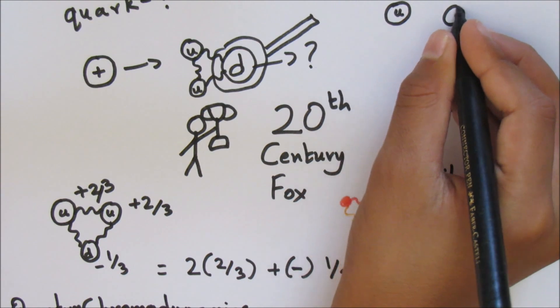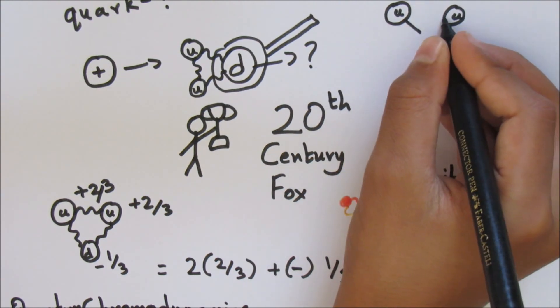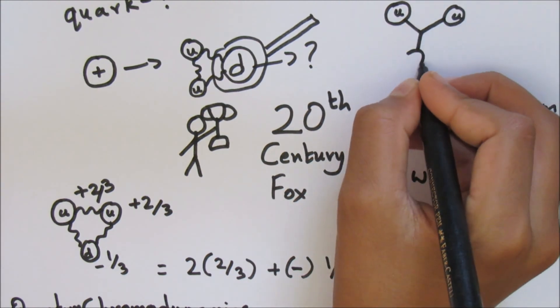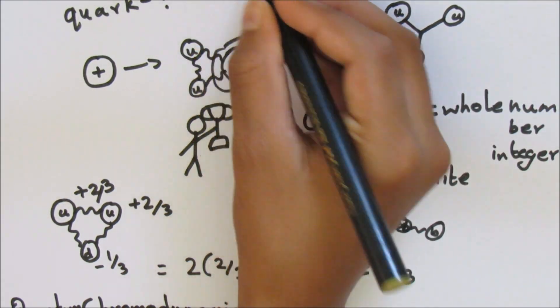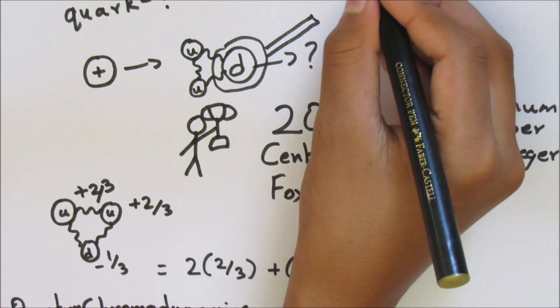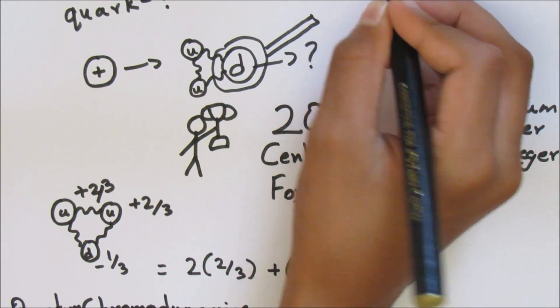Contradicting prior belief, instead of the flux tubes at the edge of the quarks like a triangle, they are through the center of the quarks, stated by supercomputer simulations, like Google's largest computer in the world.